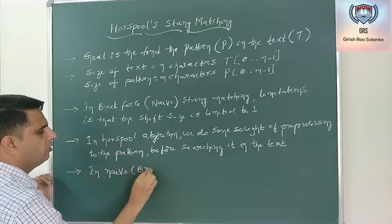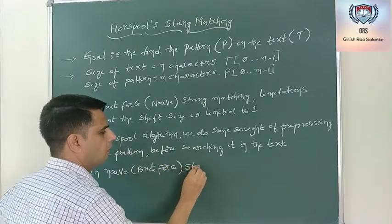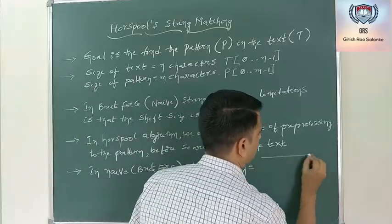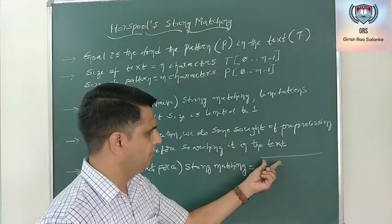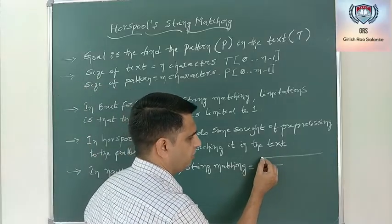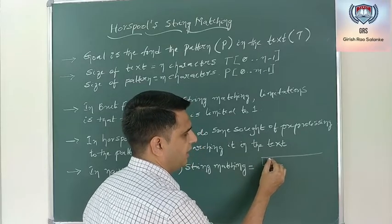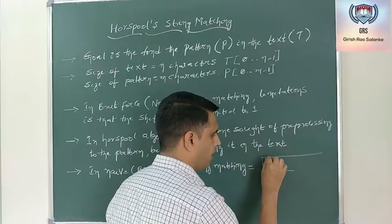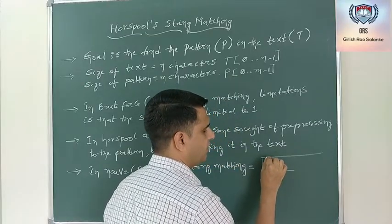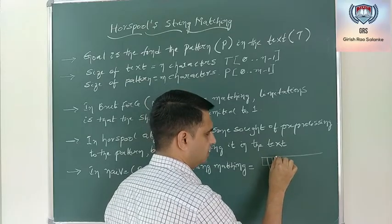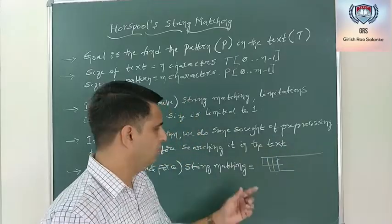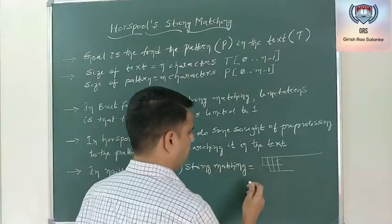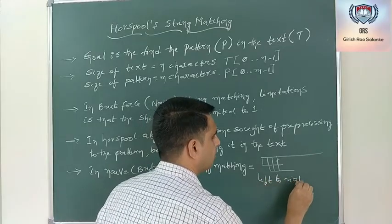One difference compared to NAV string matching: in NAV, we align the pattern with the text and comparison is always done from the left side. I compare the first character, if it matches I go for the second, and so on. If a mismatch occurs I shift by one — comparison is always left to right.